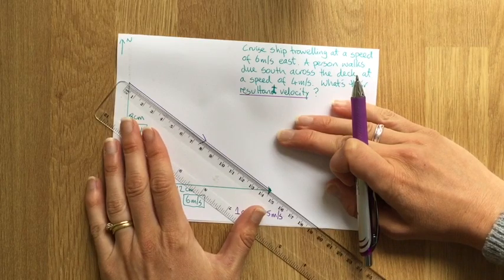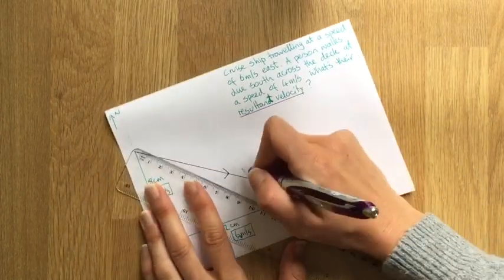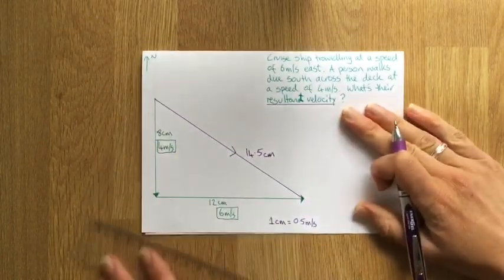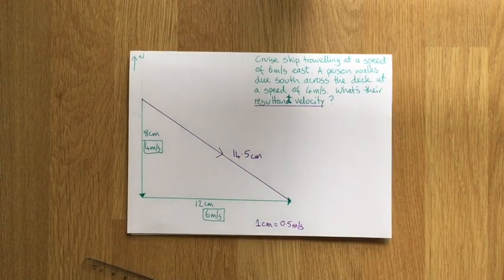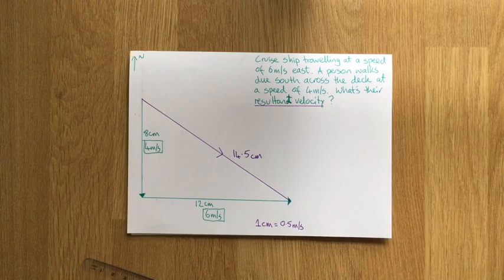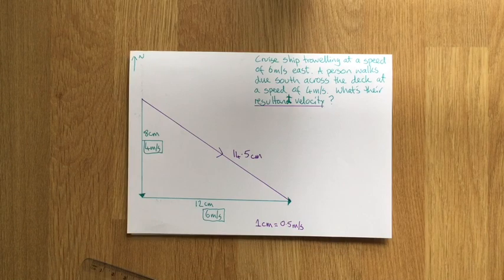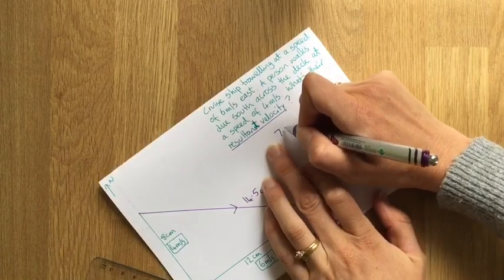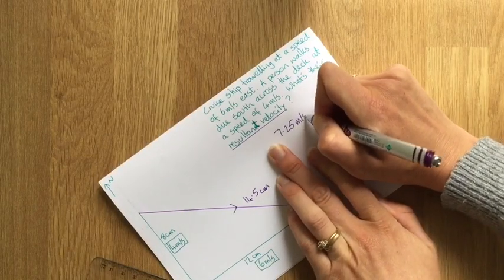That's working out at about 14.5 centimeters. So it's 14.5 centimeters. We're basically halving that to work out what that is as a speed. So 14.5 divided by 2. So 14 divided by 2 is 7, so 7 and a quarter. So the resultant velocity then is going to be 7.25 meters per second.